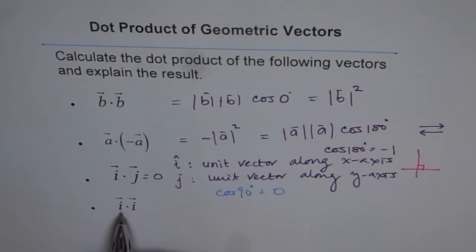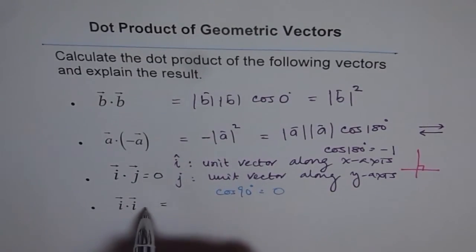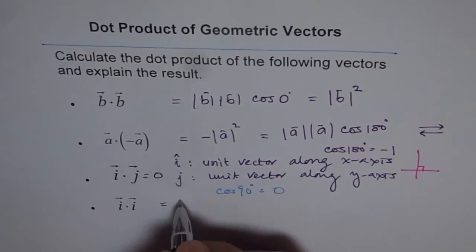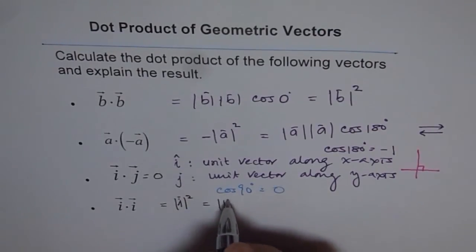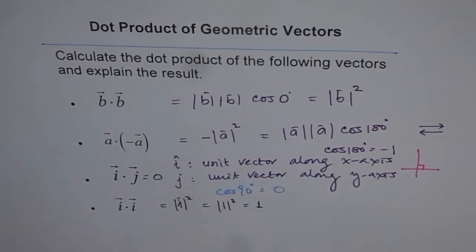How about if they are in the same direction? So here you will get both magnitudes of 1. So it will be magnitude of i squared, which is magnitude of 1 squared, which is 1.